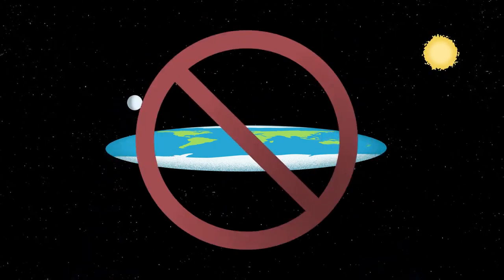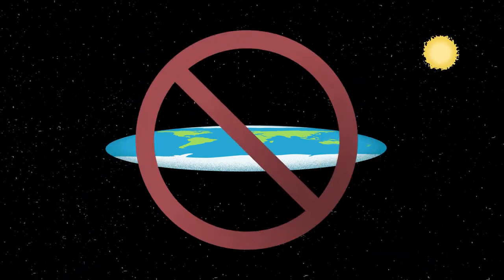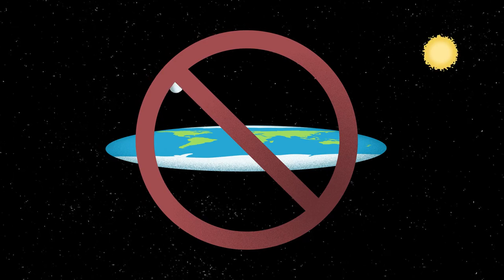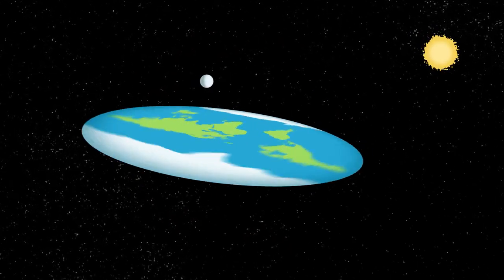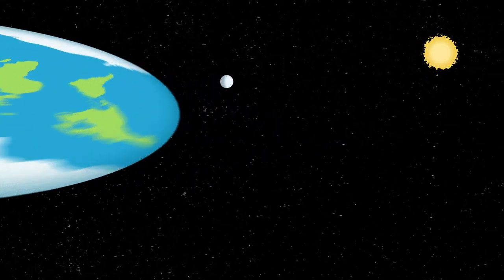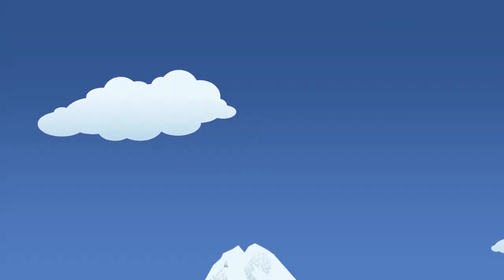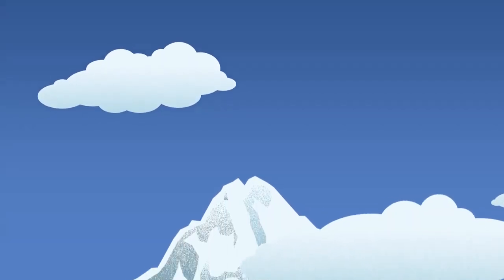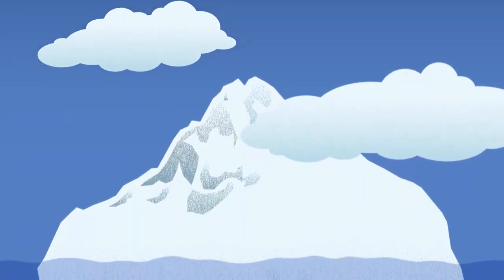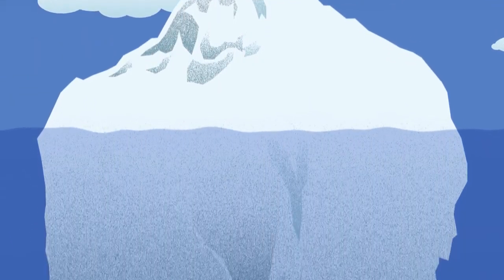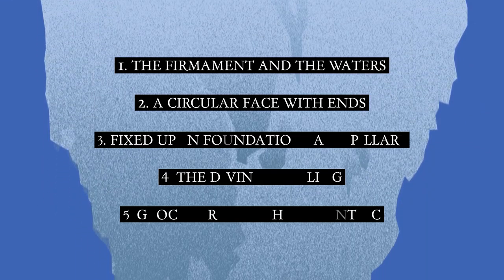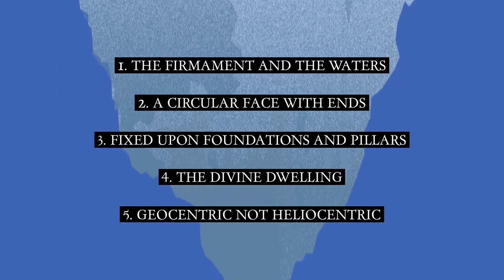This is not biblical cosmology. Such a conception is circulated by misinformation agents as a way to ridicule and discourage investigation of the subject. When it comes to how vastly different biblical cosmology is to the spinning space ball, an absence of curvature is just the tip of the iceberg. Here are five key aspects of biblical cosmology.